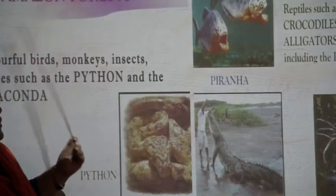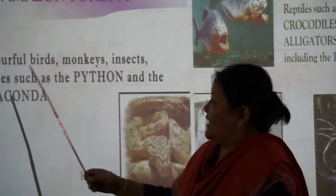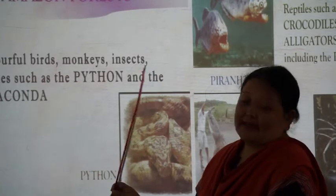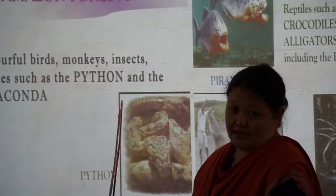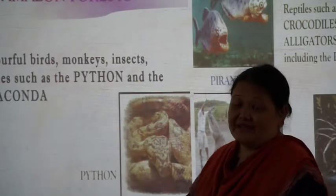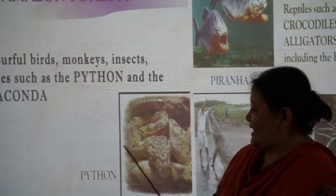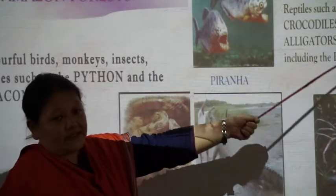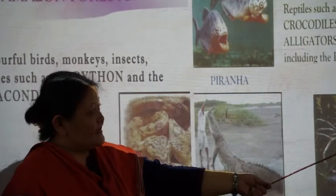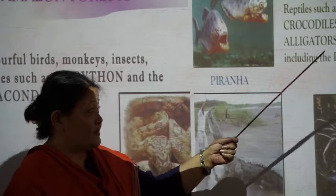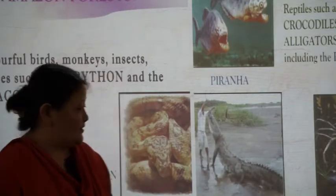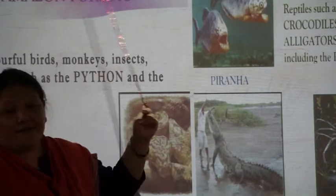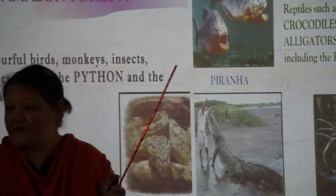In the Amazon forest you have colourful birds, monkeys, insects, and snakes such as the anaconda. In the thick Amazon forest you can also find the python and the anaconda. You also have reptiles such as crocodiles and alligators, and fish including the piranha, which is a very poisonous fish. Crocodiles, alligators and piranha are found in the Amazon forest of South America.